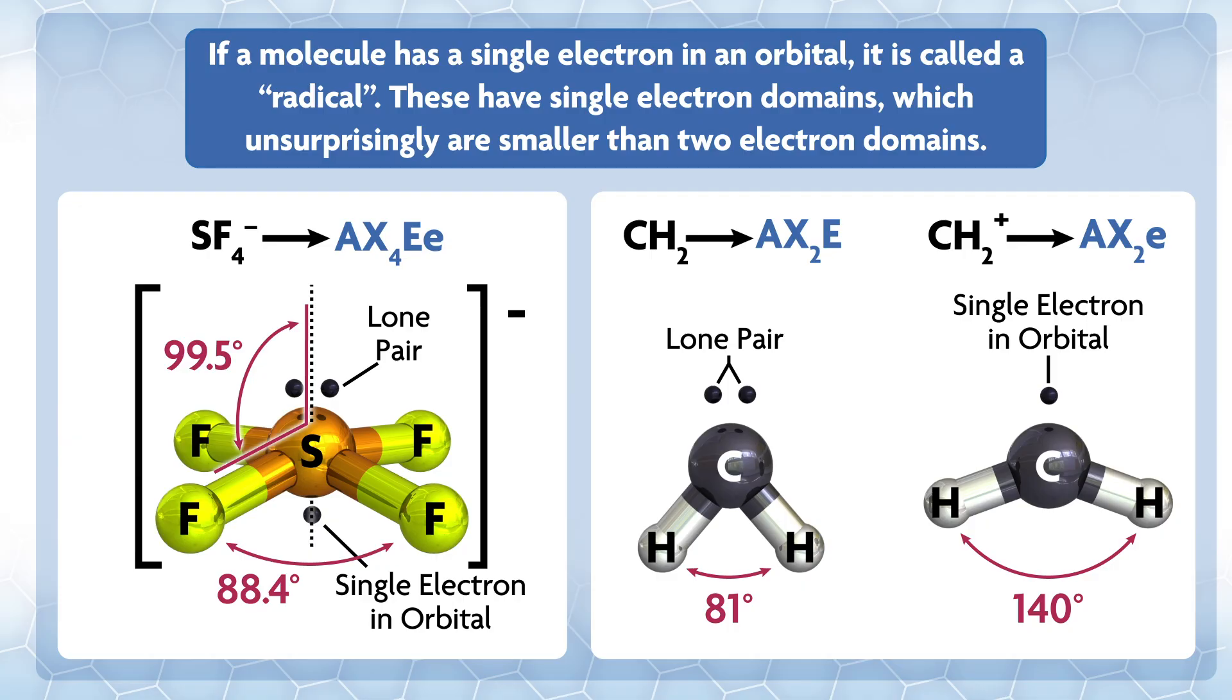If you just make the group physically very large, you can get deviations where electronegativity stops determining the bonding pattern, but otherwise electronegativity tells you how to build the 3D structure. If a molecule has a single electron in an orbital, it's called a radical. These have single electron domains, which unsurprisingly are smaller than two-electron domains.